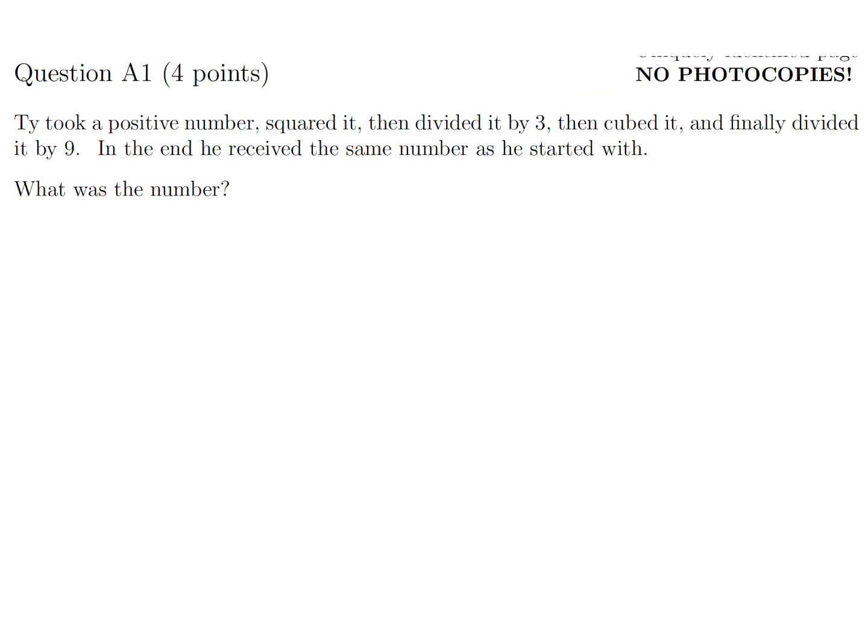Ty took a positive number, squared it, then divided it by 3, cubed it, and finally divided it by 9, and in the end he received the same number.